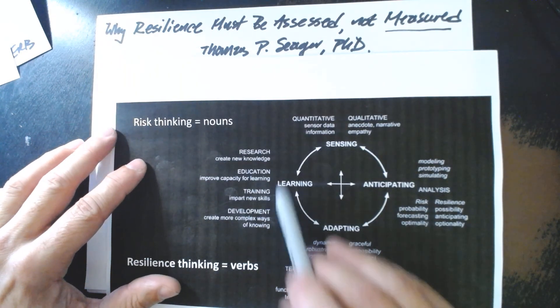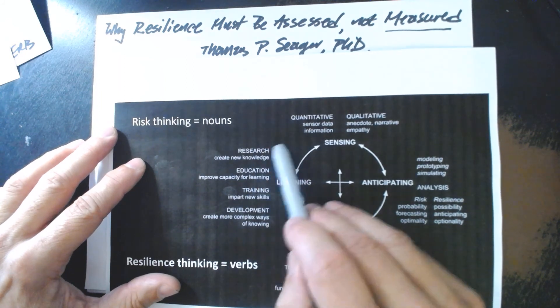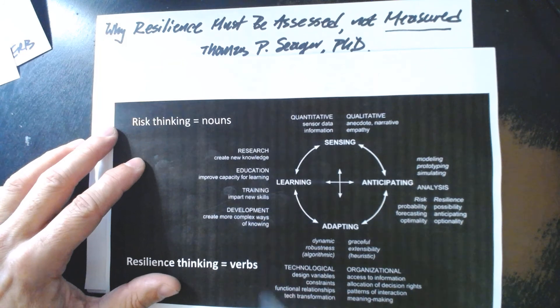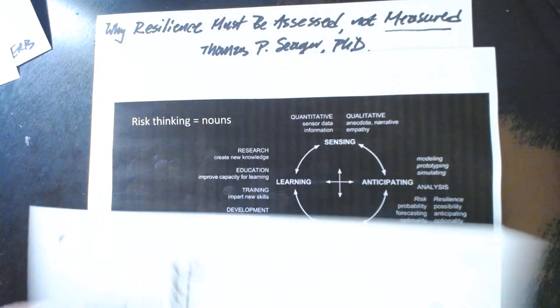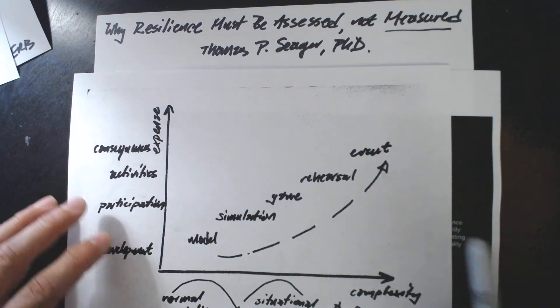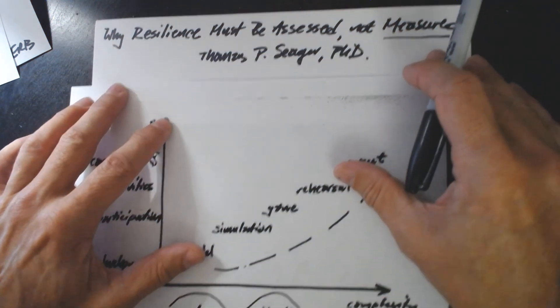Lastly, there is learning. And there are several different ways that we learn. Research, education, training, and development. More complex ways of knowing. This is the last that I want to emphasize. Because to be resilient, we must expand our way of understanding the world. From that which must be measured to that which can be assessed.